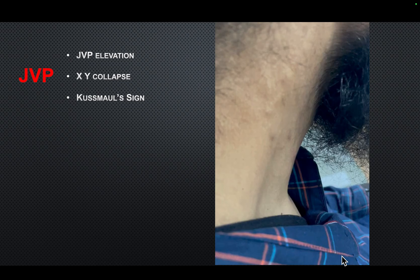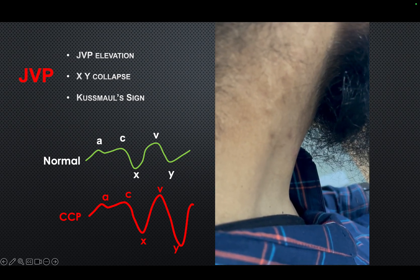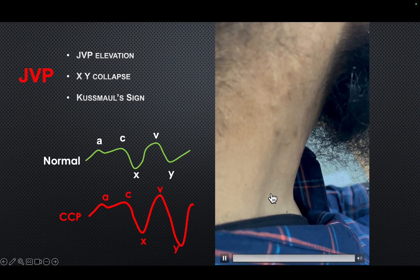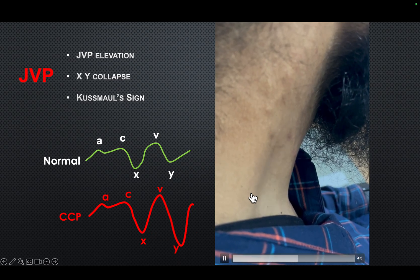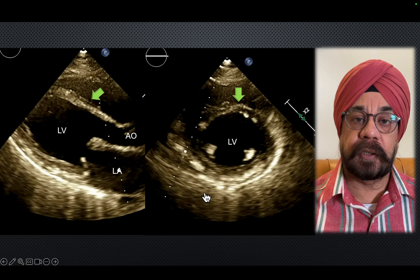JVP is elevated in patients with constrictive pericarditis and many other conditions. You have an XY collapse — that's a normal JVP waveform — and in constrictive pericarditis you have accentuated X and Y descents. Look at the negative suction or negative waveforms on the neck JVP.